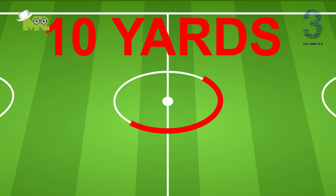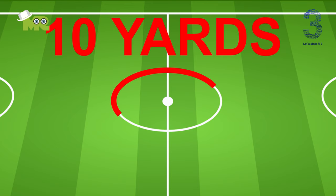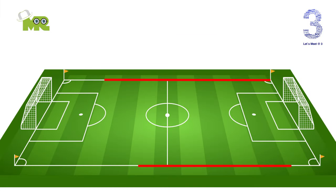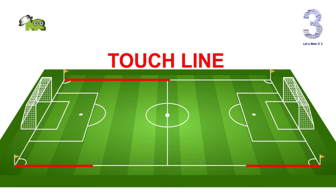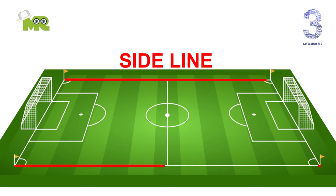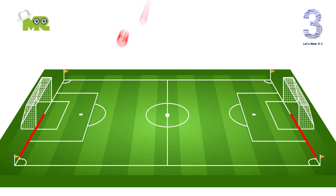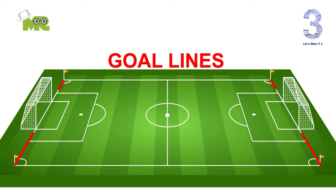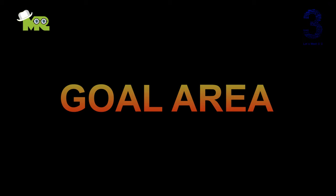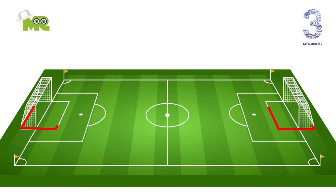The center circle is 10 yards in diameter. The boundary of the field is drawn with lines. The lines on the long sides of the field are called the touch lines or side lines. The lines at the end of the field are called the goal lines or end lines.